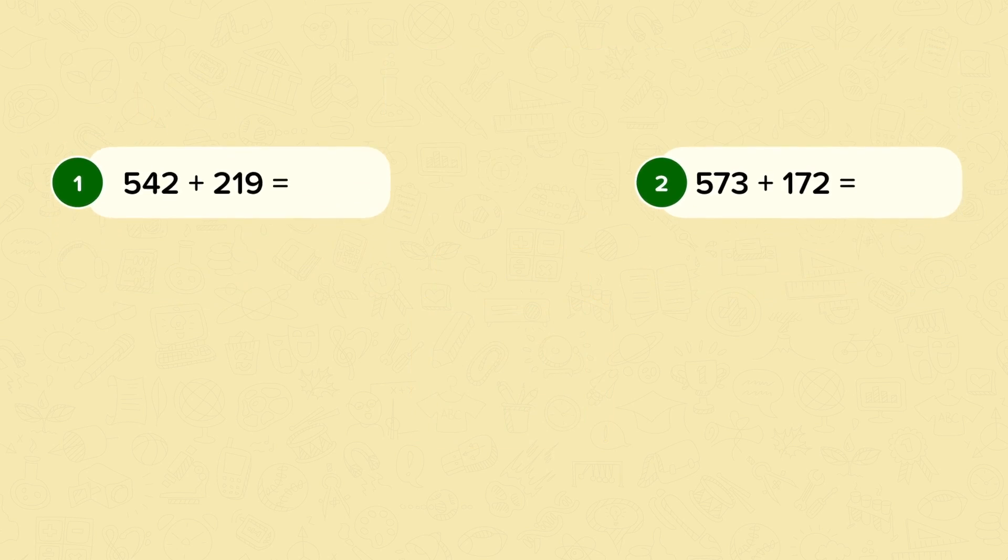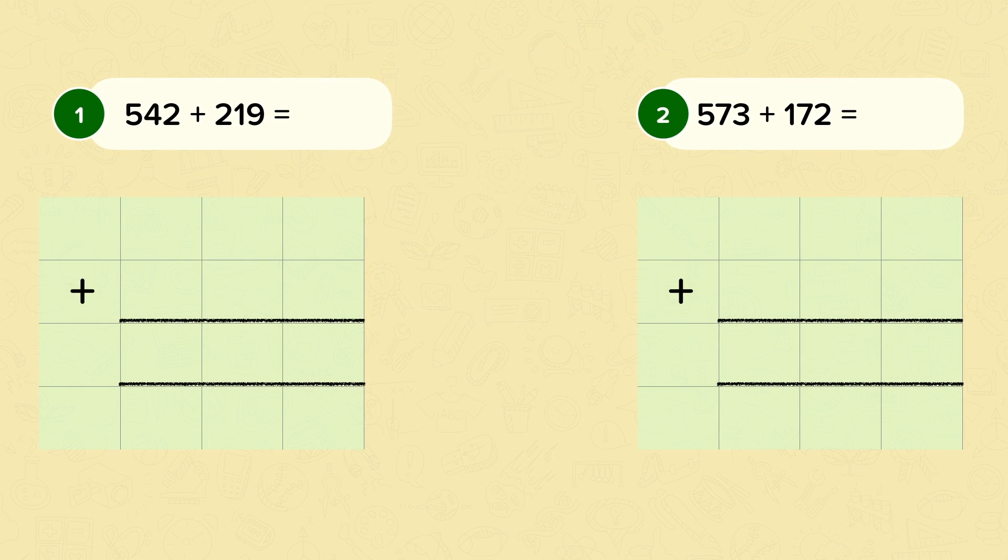Let's look at the answers. So number one. The first thing that you needed to do was add the ones. Two add nine is eleven. You can't put eleven in the ones column. So you put one in, then you exchange the ten ones for a ten, which goes in the tens column.